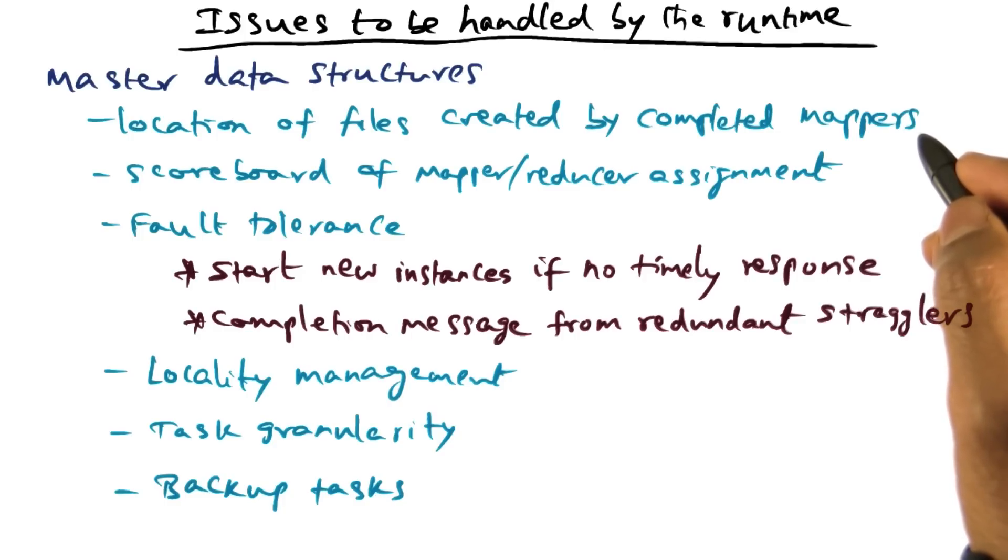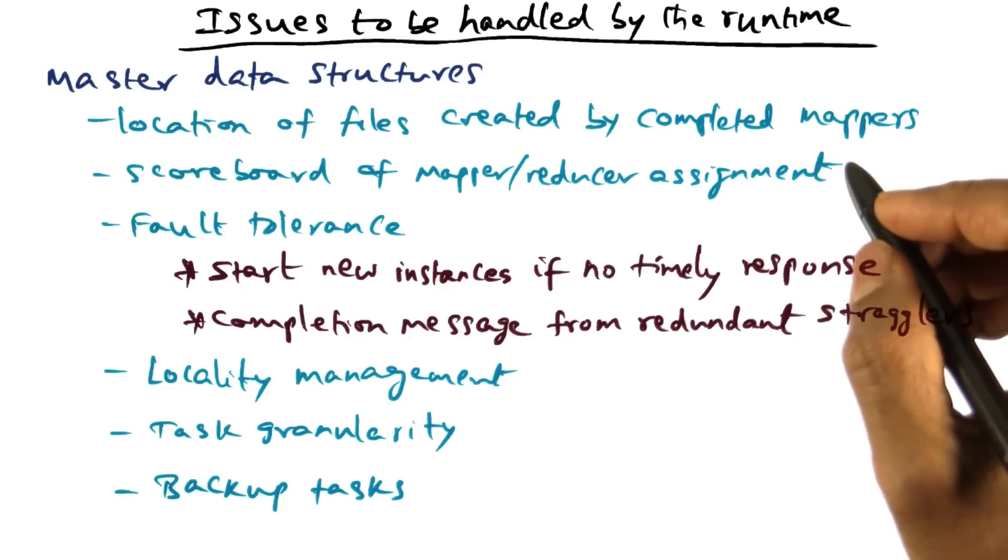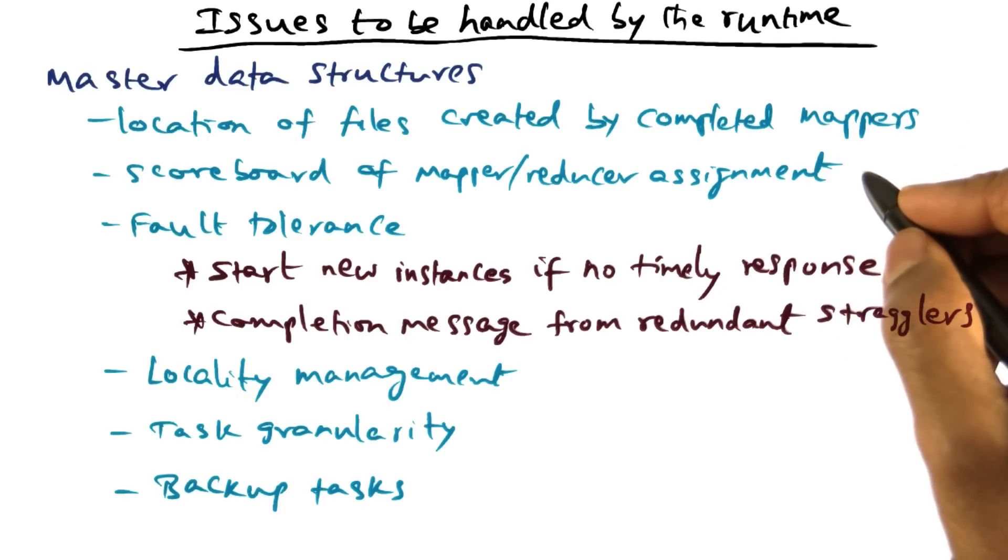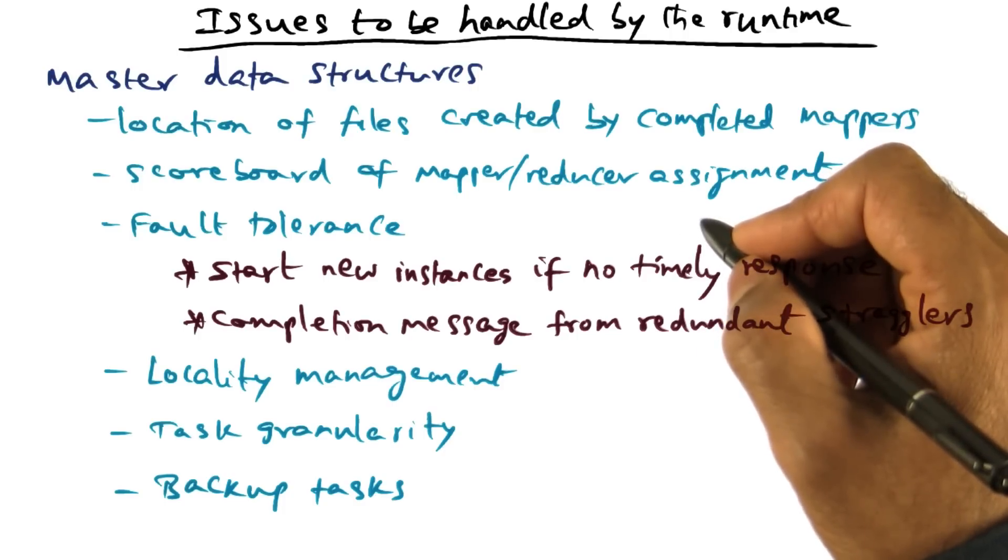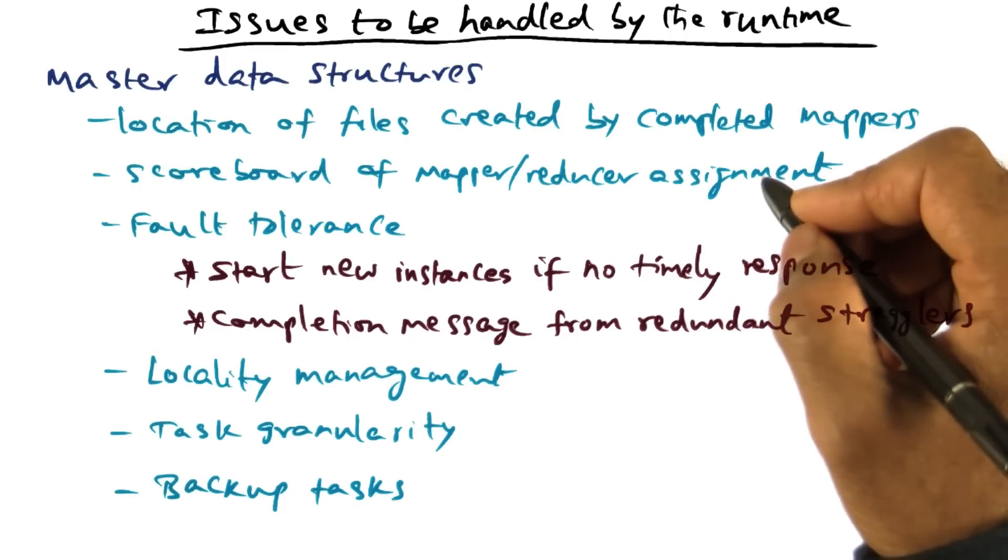Remember that each mapper is working on some node of the computational cluster, producing its output as files on its local disk. So the master has to have knowledge of where those files reside created by those mappers, and the namespace of the files that have been created by the mappers.